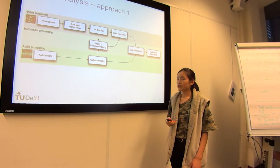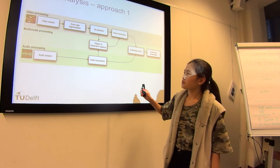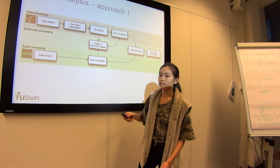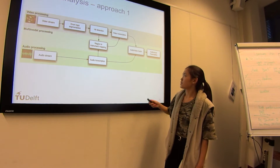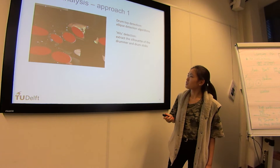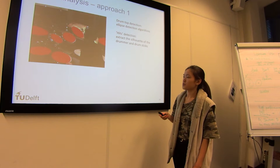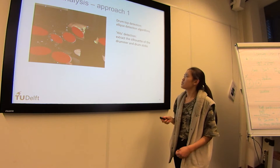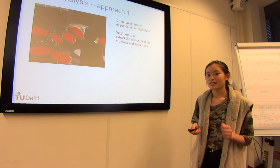There is not much research on this, but there are two general approaches. One approach, shown by a research group, performs drum top recognition to detect hitting on the drum surfaces, and uses this to generate a video transcription system combined with the audio transcription system. In this approach, drum top detection uses ellipse detection algorithms to detect the upper areas of the drums, and hit detection extracts silhouettes of the drummers and drumsticks to identify hitting actions.